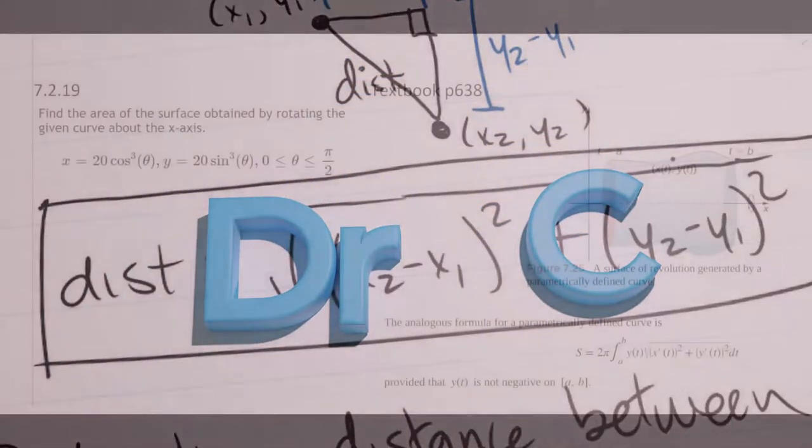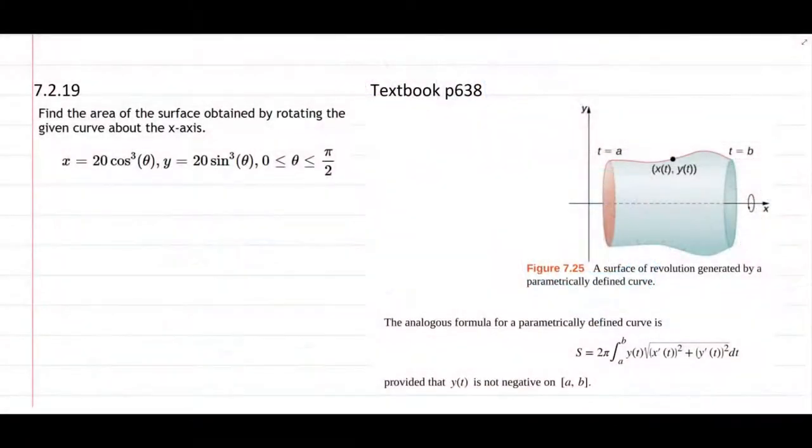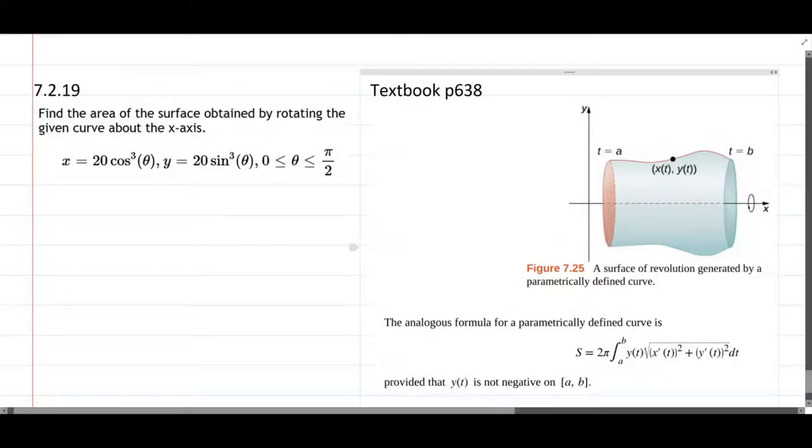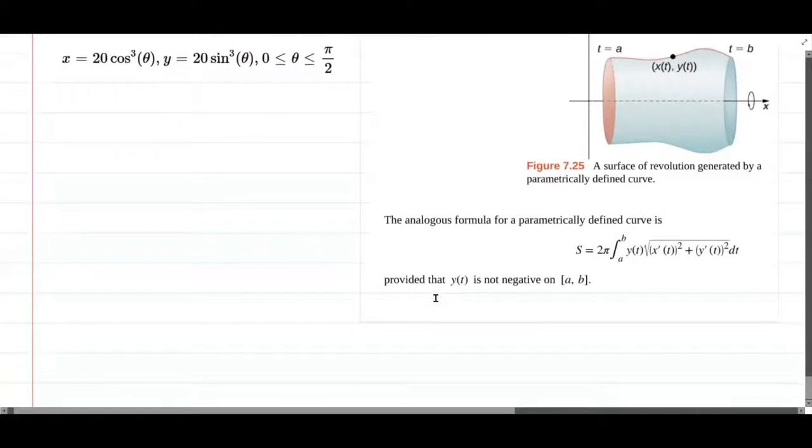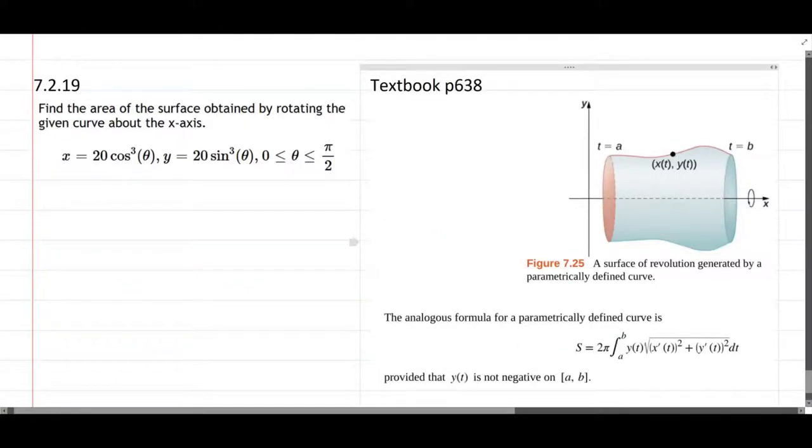We have a parameterized surface area to compute here, and it's on page 638 in the textbook. Luckily, our situation is just like this picture. We're rotating about the x-axis, just like they are here.